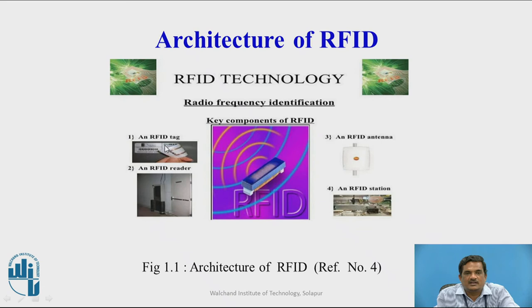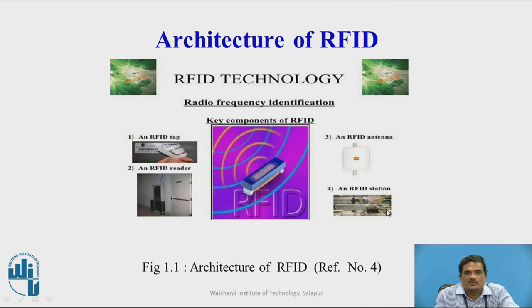Now we will discuss how these four components work together in identifying objects in an IoT setup. The RFID tag contains an identification number in a given format, usually included in a header format. It connects to the reader through the RFID link. The reader reads the information in the header and decodes it. After decoding, it identifies the source of that information, then sends it to the computer-based system or RFID station through the RFID antenna. These four components coordinate with each other to identify, recognize, and transmit information to the computer system.